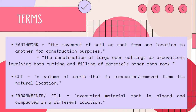Cut is a volume of earth that is excavated or removed from its natural location. Embankment or fill is excavated material that is placed and compacted in a different location.